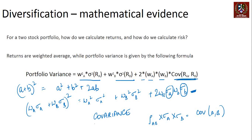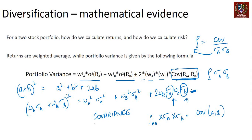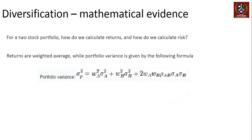Since correlation coefficient equals covariance divided by sigma A times sigma B, it follows that covariance equals correlation times sigma A times sigma B. Substituting this back into the portfolio variance formula, the blank term is rho. So portfolio variance equals: weight of A squared times sigma of A squared, plus weight of B squared times sigma of B squared, plus 2 times weight of A times weight of B times sigma of A times sigma of B times rho(A,B). Taking the square root of portfolio variance gives the portfolio standard deviation.